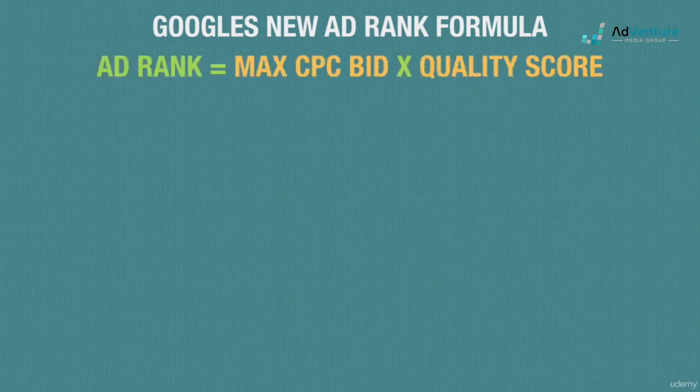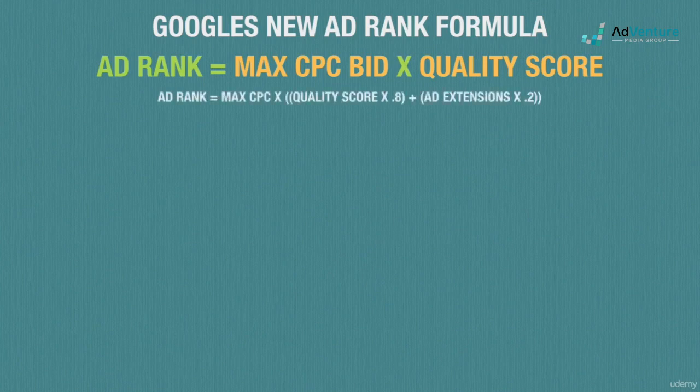The new formula for ad rank that Google introduced in 2005 was: ad rank equals max CPC bid times quality score. The formula stayed that way until 2013, when Google introduced the expected impact of ad extensions on CTR as part of the ad rank formula. Google found that different sorts of ad extensions like site links, call outs, review extensions, etc. could favorably impact an ad's CTR, and they included these ad extension CTR projections into the ad rank formula.